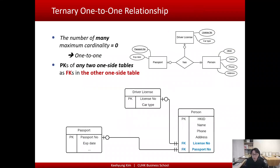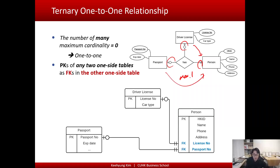What if we have a one-to-one tunnel relationship — where all maximum cardinalities are simply one? In that case, primary keys of any two one-sided tables can be added as foreign keys into the other one-sided table. You can add this one here and the primary key of this one here. So Driver License's primary key License_Number is added here, and Passport's primary key Passport_Number is added here, and both are added as foreign keys.